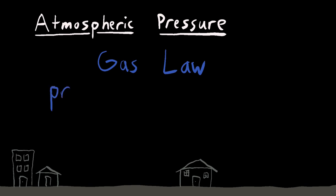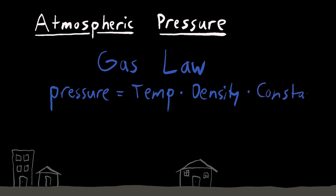And the gas law, written in its long form, is pressure equals temperature times density times a constant. Now the form of this that we're going to be using is pressure is proportional to temperature times density. And that's the symbol for density, it's pronounced rho.